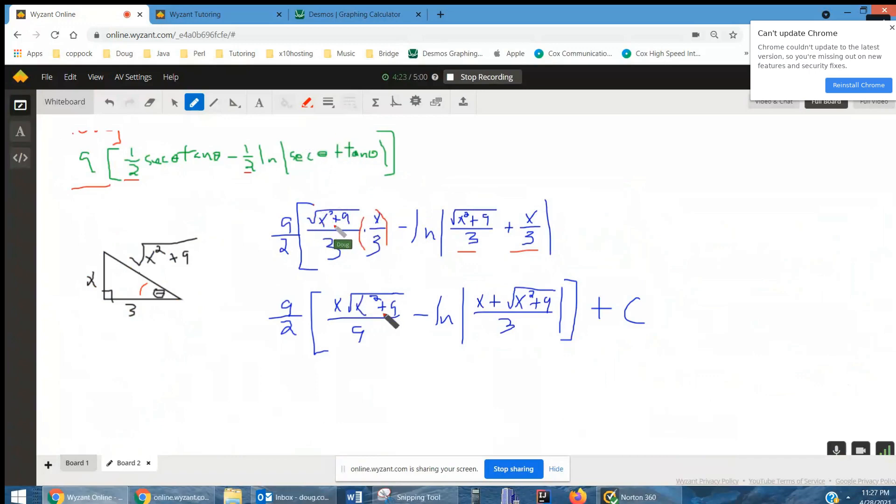And I simplified it a little bit by multiplying these two factors together. I've got x times the square root of x squared plus 9 over 9. Minus,